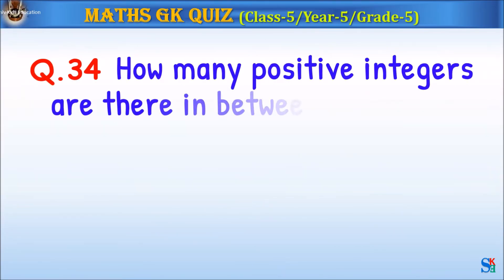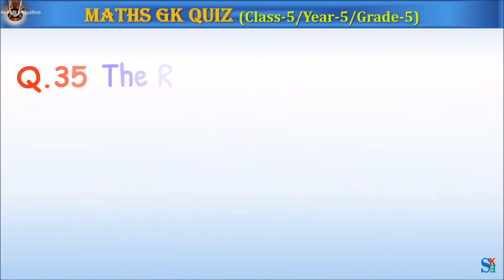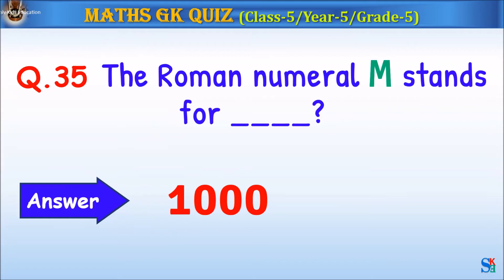Question 34: How many positive integers are there in between minus 5 and 5? The answer is 4. Question 35: The Roman numeral M stands for what? The answer is 1000.